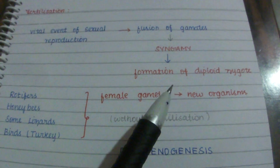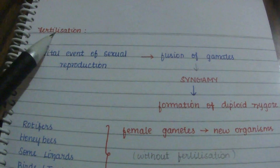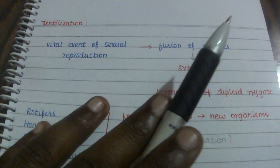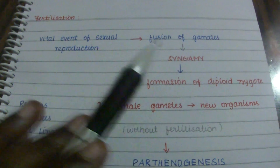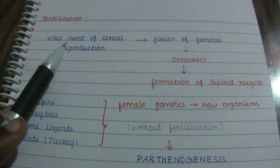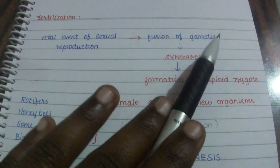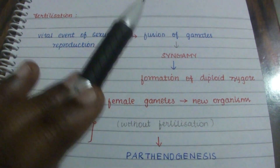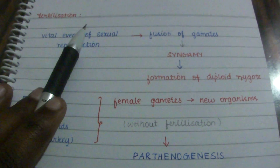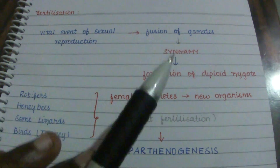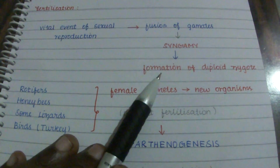When two gametes fuse together, they form the diploid zygote. The two gametes are haploid, and upon fusion they produce a zygote which is diploid. This fusion of gametes, termed syngamy or fertilization, then leads to the formation of a diploid zygote.